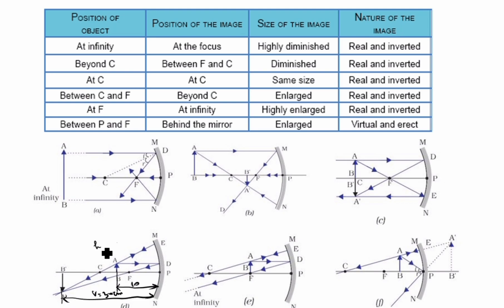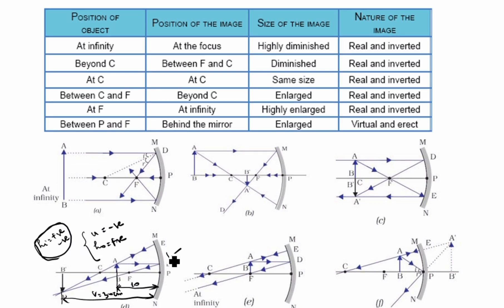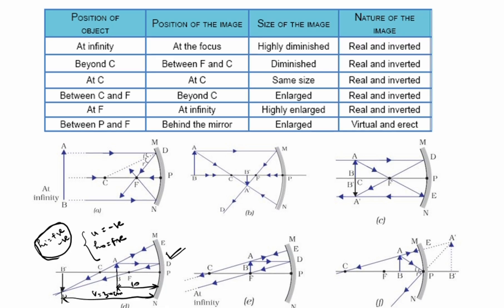h_o is always positive for lens and mirror. u is always negative for lens and mirror - don't confuse this one. h_i can be negative or positive for lens and mirror depending on the question. Based on the question, we will draw the ray diagram. Thanks for watching this video.